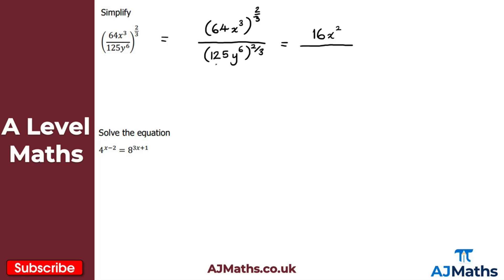For the denominator, I've got 125 to the power of 2 over 3: the cube root of 125 is 5, and then squared gives 25. For y to the 6, raised to the power of 2 over 3 — power raised to another power — we multiply: 6 times 2 over 3 gives 4. So the denominator is 25y to the 4. Our final simplified form is 16x squared over 25y to the 4.